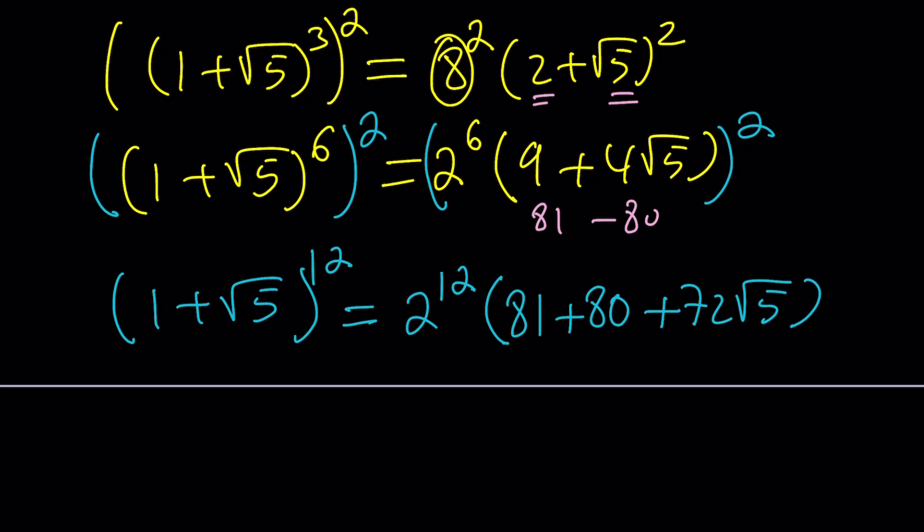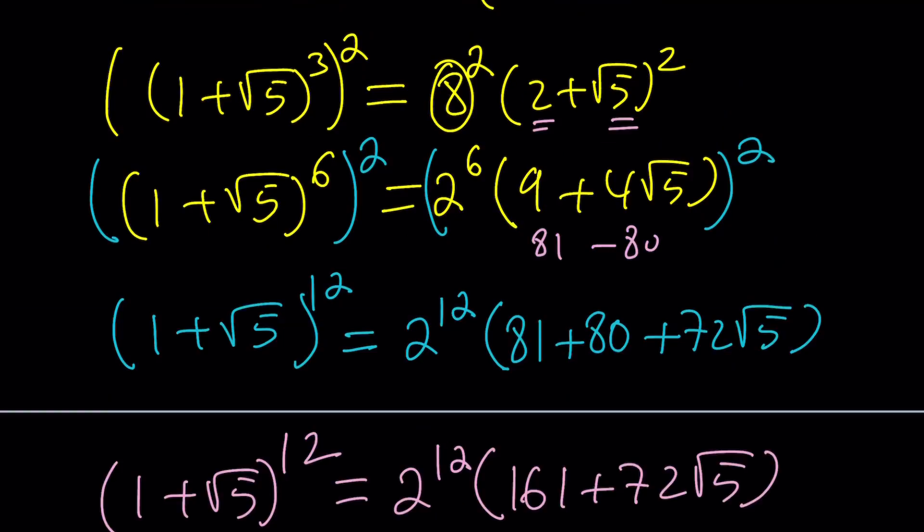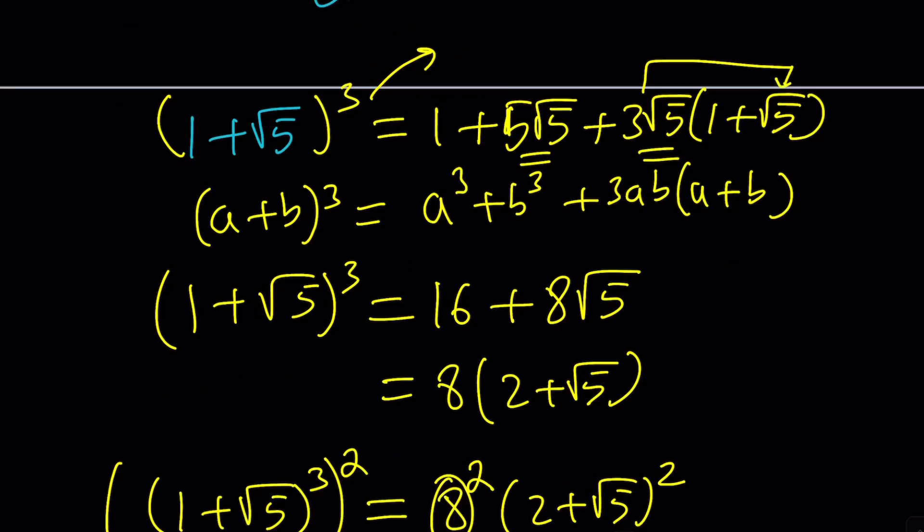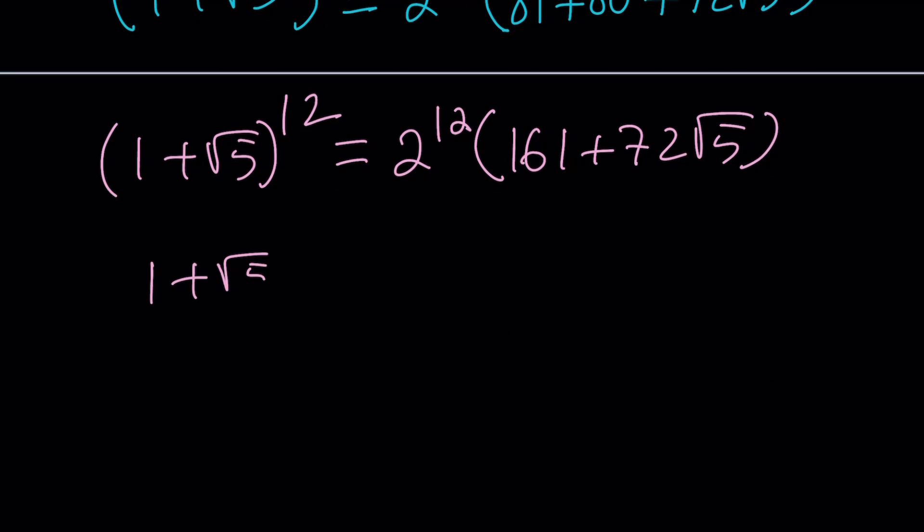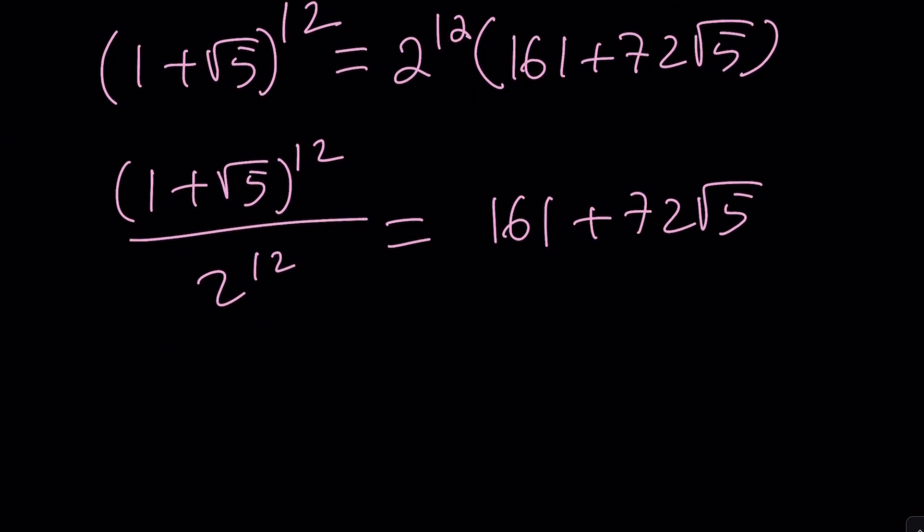So let's not get distracted. 2 to the 12th. And now this is going to give me 161 plus 72 root 5. Such a large number. But guess what? All I have to do is now divide this by 2 to the power 12th. So 2 to the power 12th is just going to cancel out. So this is going to be divided on both sides by 2 to the 12th and the answer is going to be 161 plus 72 root 5. But what is that supposed to mean? Well, I was looking for AB values. So A is the constant and B is the coefficient of 72. In other words, A is equal to 161 and B is 72.